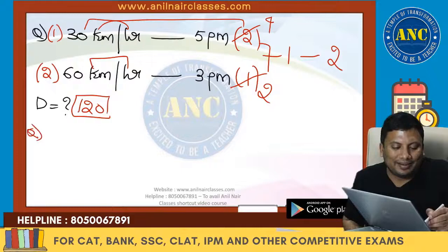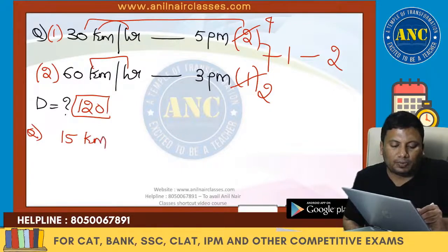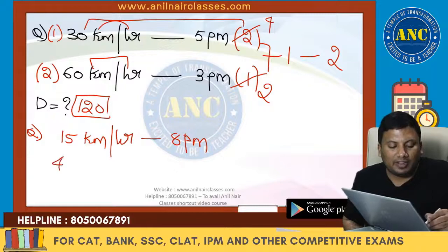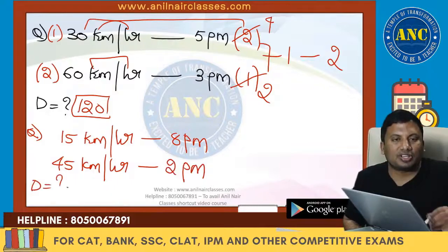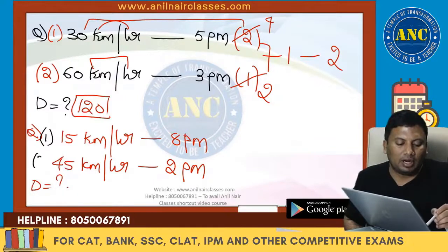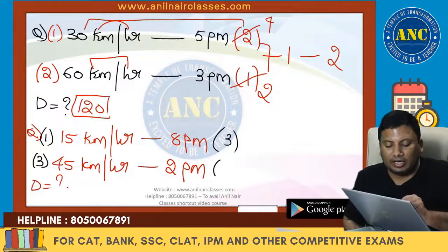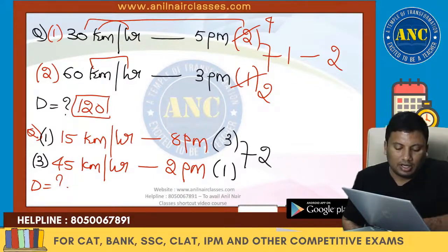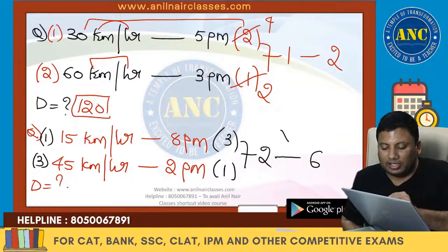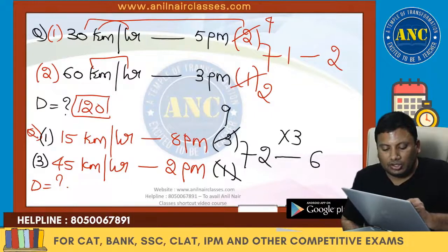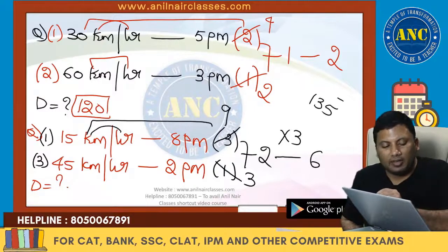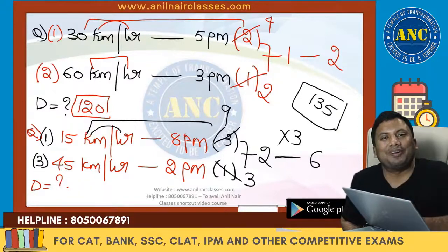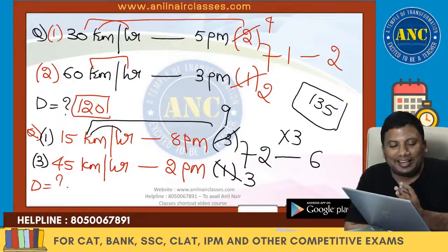Next: 15 km/h arriving at 8 pm, 45 km/h arriving at 2 pm. Speed ratio = 15:45 = 1:3; time ratio = 3:1; difference = 2. 2 pm to 8 pm = 6 hours. So 1 unit = 3 hours. Three units = 9 hours at 15 km/h → distance = 135 km. Or one unit = 3 hours at 45 km/h → distance = 135 km. Distance is 135 kilometers.